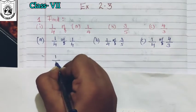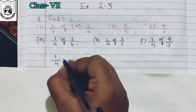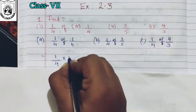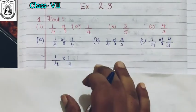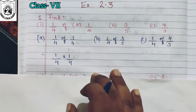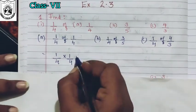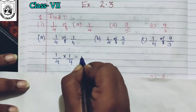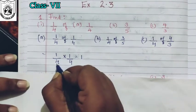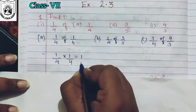So one-fourth multiplied by one-fourth. What will be your answer? One times one will be one, four times four is sixteen. So the answer is 1/16.